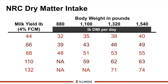This table takes the old NRC equations and generates some guideline numbers. So if I had a group of cows producing 88 pounds of 4% fat corrected milk — a very good herd — weighing 1,320 pounds, the target dry matter intake would be about 53 pounds. There are also some small numbers here for Jersey cows because of extremely high levels of milk production. These are good guidelines, and certainly targets to look at when formulating rations or using computer software programs.